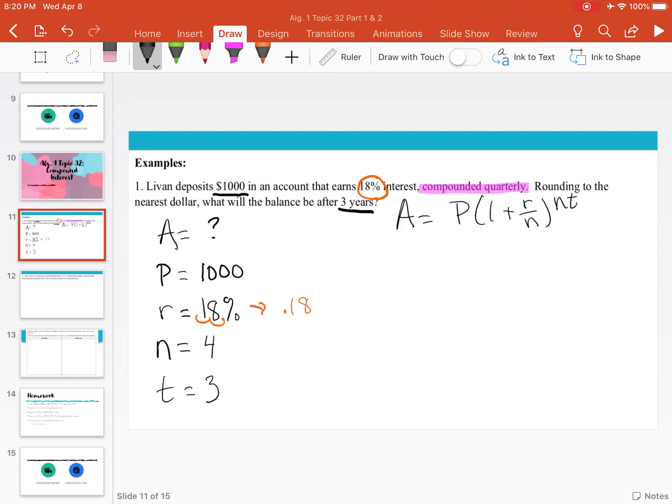Now all we have to do is plug in. So A equals 1,000 times 1 plus 0.18 divided by 4 to the 4 times 3 power. Now you can plug this in, especially if you're using Desmos. I like to be very careful when plugging into a calculator because we have a lot going on here.